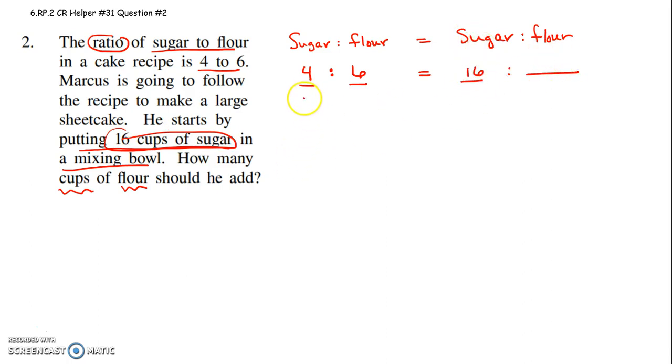We don't know how much flour that is, but there's a connection between the sugars. You start here at four cups, and it goes up to 16. Well, four times four is 16. It means you're taking the original ratio and just quadrupling it, multiplying it by four.